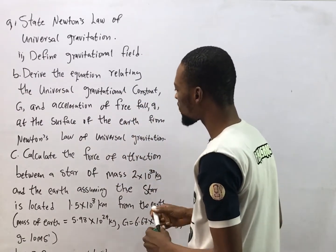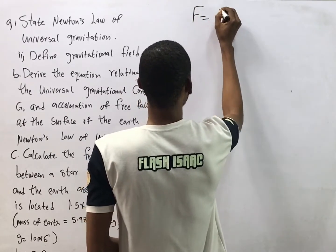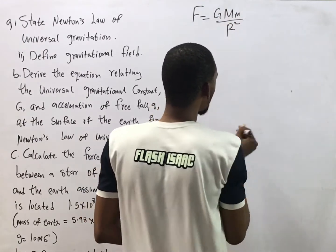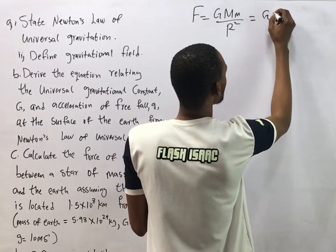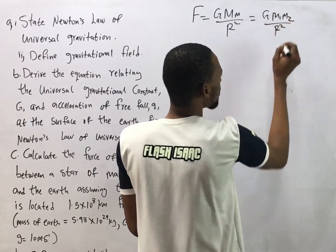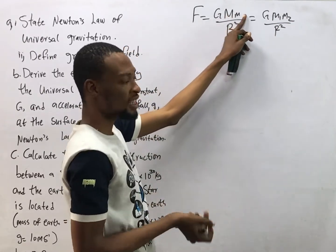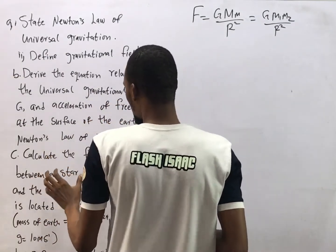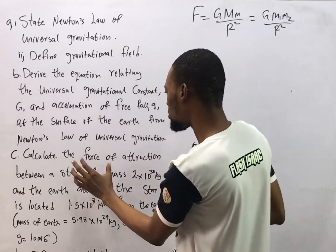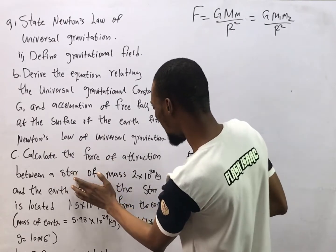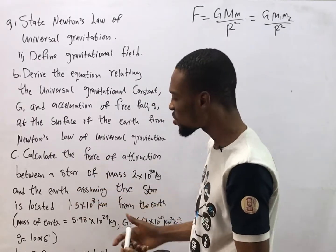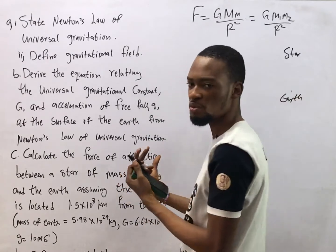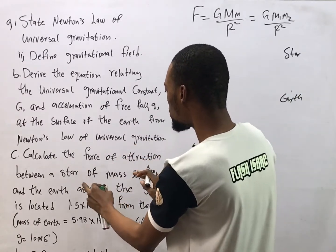Part C says: calculate the force of attraction. The formula for force of attraction is F = G·m1·m2 / r². Here we calculate the attraction between a star and the Earth — two bodies. One body is the star, the other is the Earth.